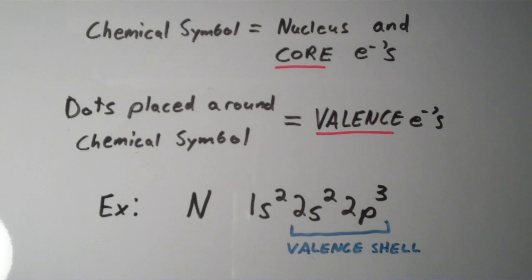Notice that as an example, let's say we want to do the Lewis structure for nitrogen. Well, the electron configuration of nitrogen is 1s², 2s², 2p³. Nitrogen has 7 electrons, but it has 5 electrons in its valence shell, which is the n equals 2 shell, where n is the principal quantum number.